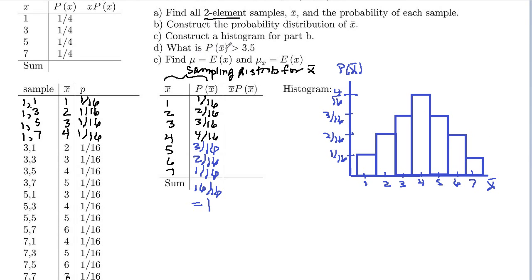What is the probability that X bar, if you pick a random sample, that the mean of that sample is greater than 3.5? So this actually was part B. This is part A. Part C. D.